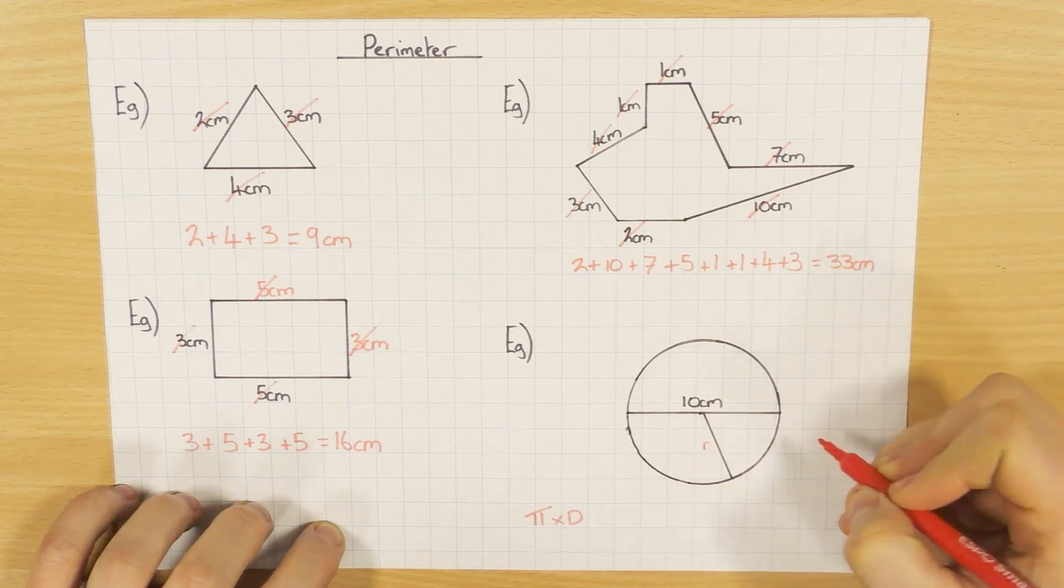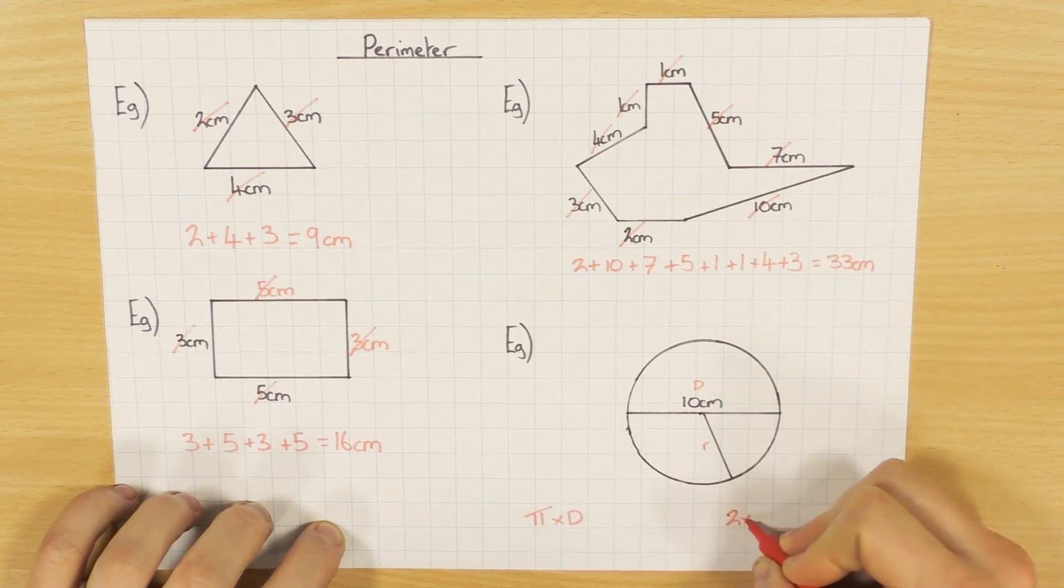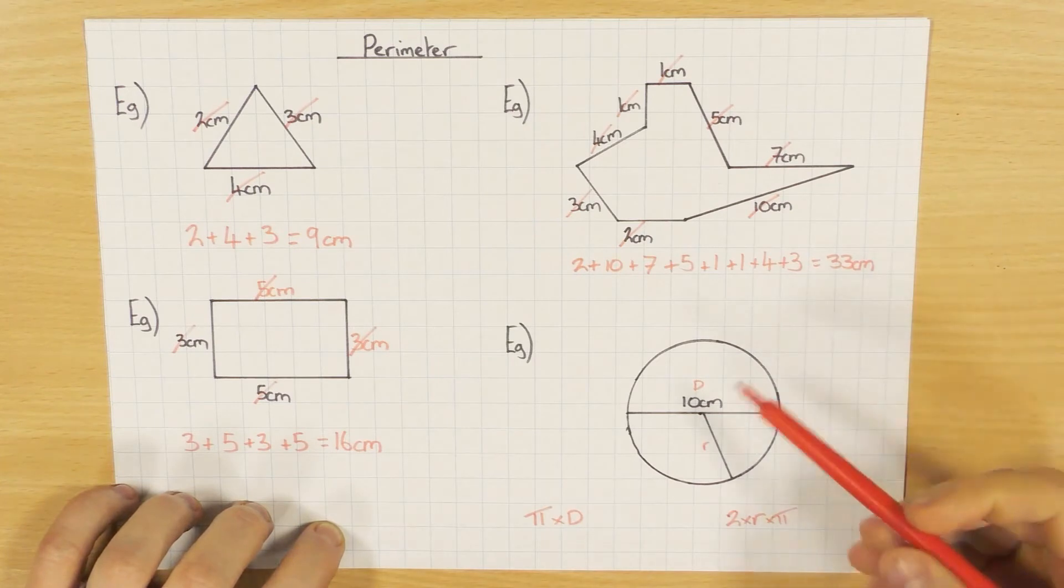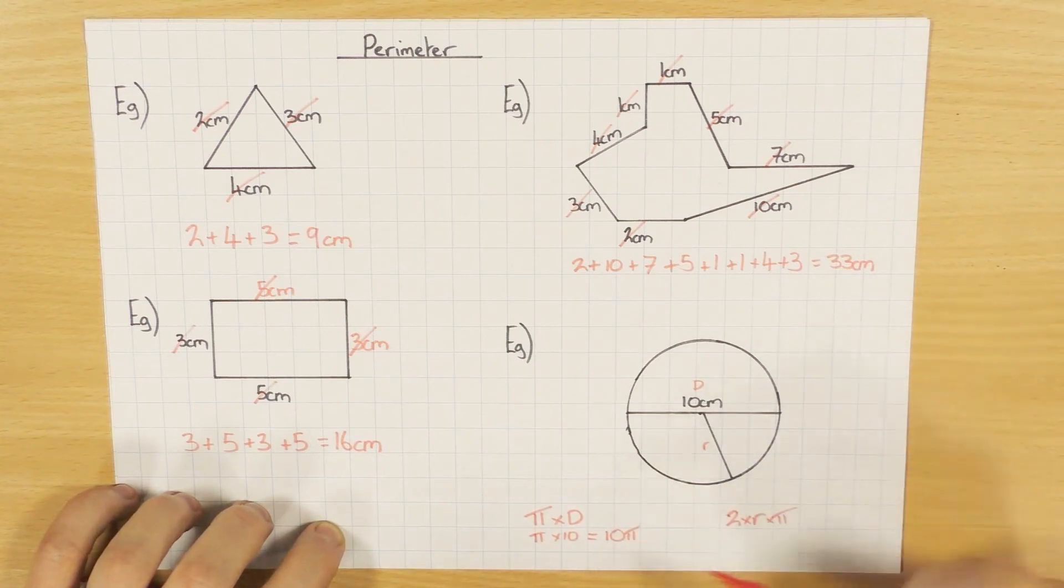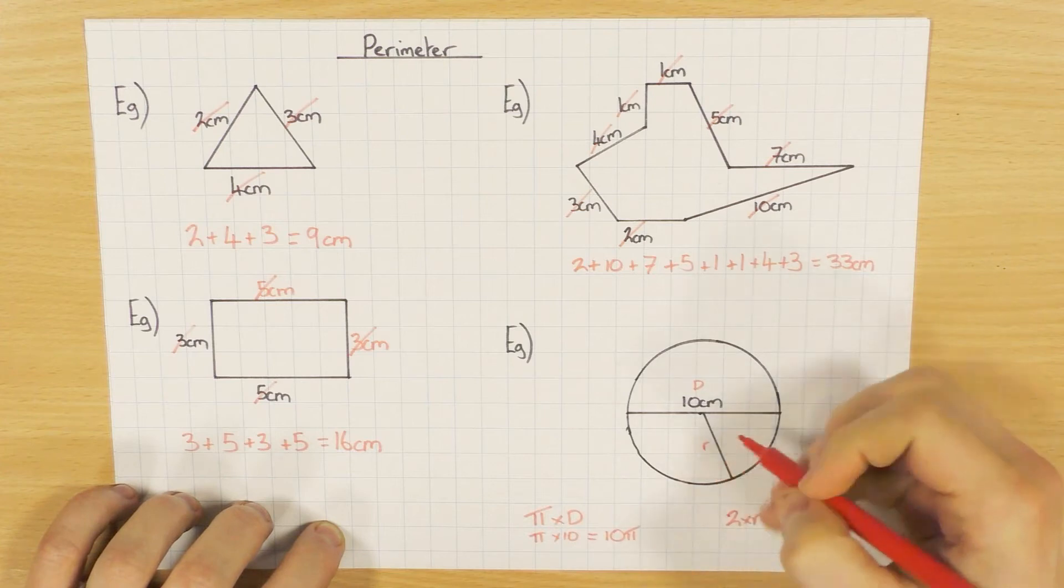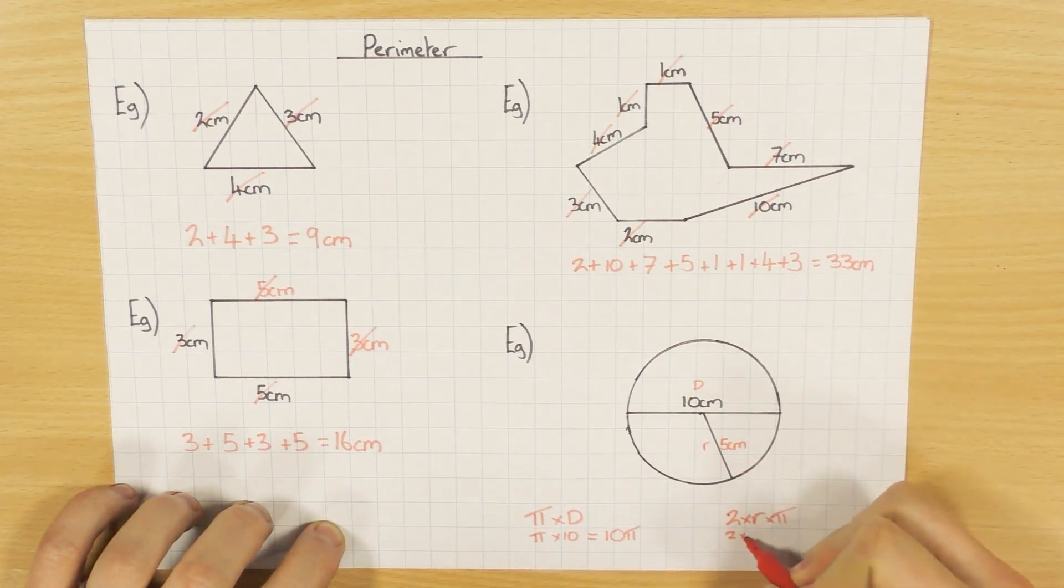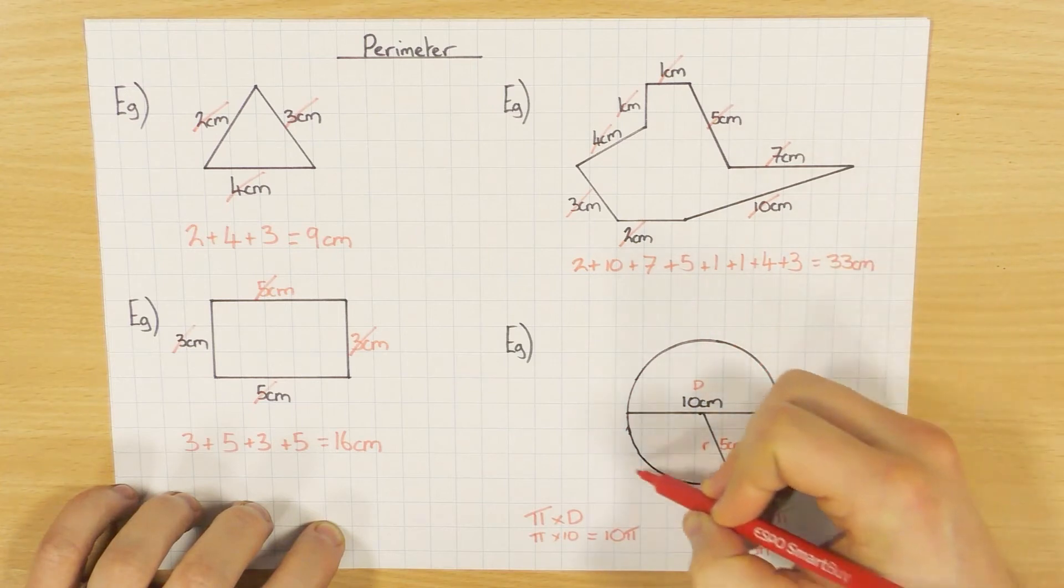If you have the radius, you do 2 times the radius because doubling the radius gives you the diameter, then times that by pi. So in both cases, pi times 10 because 10 is the diameter, which equals 10 pi. With the radius formula, if the diameter is 10, the radius is 5cm. So 2 times 5 times pi also gives 10 pi. Same answer, just depending on whether they give you the radius or diameter. To reiterate, circumference is the same as perimeter around the circle.